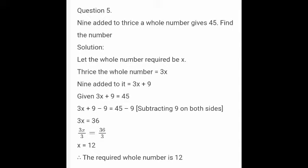For that, subtract 9 from both sides. To cancel 9 from the left hand side, we are going to subtract 9 from both sides. Then, plus 9 minus 9 get cancelled, remaining 3x. So, 3x equal to 45 minus 9, equal to 36.